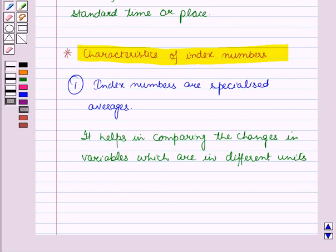For example, in the construction of a consumer price index, various items are taken into account such as food, house rent, clothes, lighting and other miscellaneous items which are in different units.